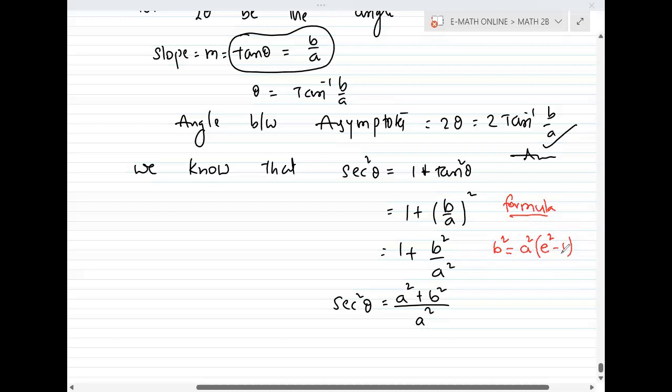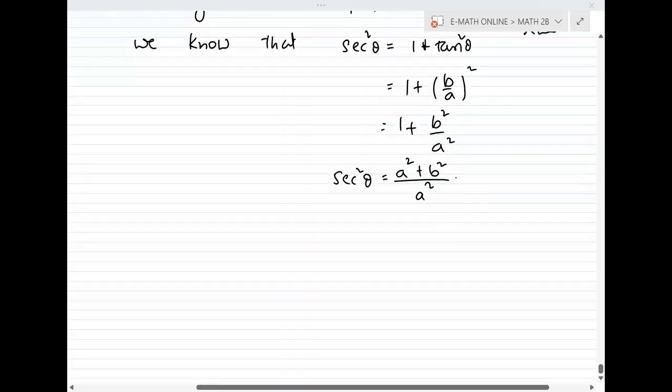From the eccentricity formula: b square equals a square (e square minus 1). So b square by a square equals e square minus 1. Therefore, b square by a square plus 1 equals e square.